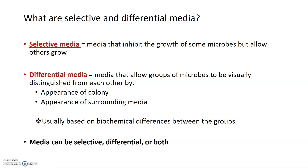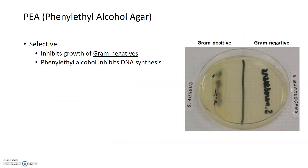A medium can be selective, differential, or both selective and differential. I'm going to start by talking about a medium that is just selective but not differential, known as PEA, or phenyl ethyl alcohol agar. PEA is selective against gram-negative bacteria.